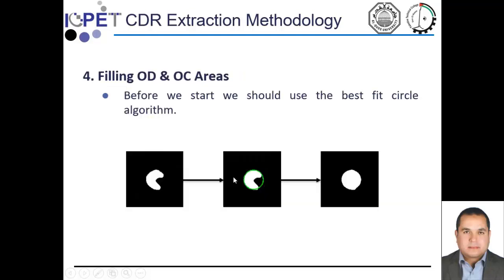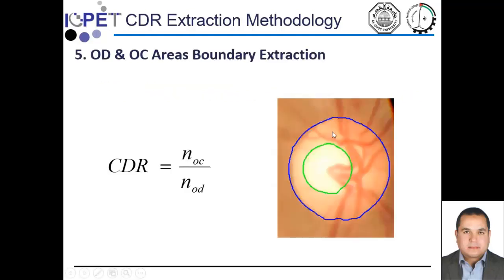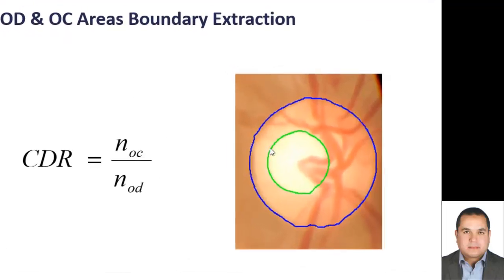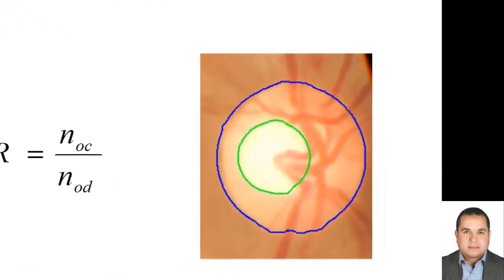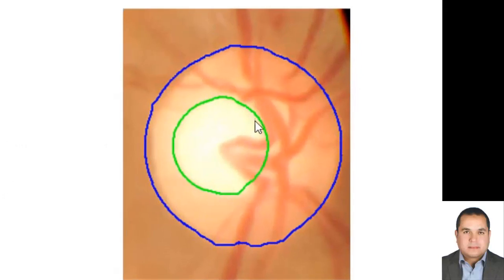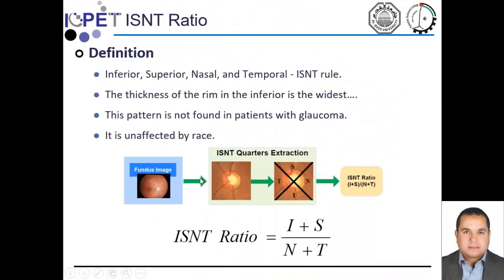In this step, we fill the cup area using the best-fit circle algorithm in order to get a circular shape of the optic cup. Finally, we calculate the cup-to-disc ratio using this equation. This is one of the results showing the extraction of the cup and the disc.